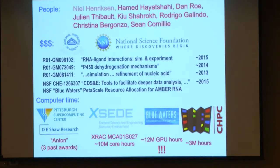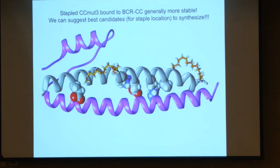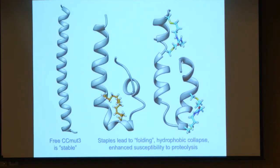I also want to briefly show one other thing: we're looking at stapled peptides, a collaboration with my wife's lab. We can show that these staples improve the stability of the drug target, but when the experiment was done the staples disappeared immediately in plasma. It turns out that when you run the monomers, the monomers fold up, making them more susceptible to proteolysis — and that's why the staples don't actually work.